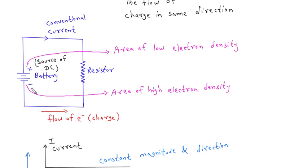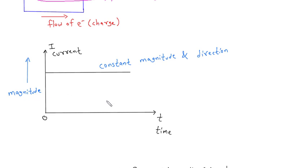So the electrons flow from high electron density to low electron density area. The time is taken on x-axis and current I is taken on y-axis. In case of direct current, the magnitude and direction is constant.